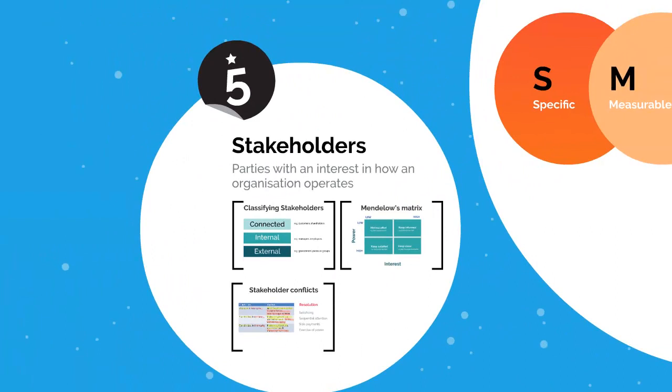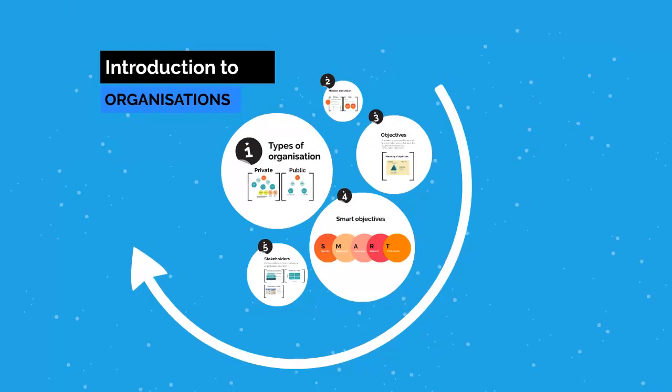So that's stakeholders, and that is an introduction to organisations. We looked at types of organisation — private and public — we looked at mission and vision, we looked at objectives and the hierarchy of objectives, and we looked at how to make objectives effective using the SMART model. Then lastly we looked at stakeholders — the people that have interest, influence and power over the decisions we make in our organisations.